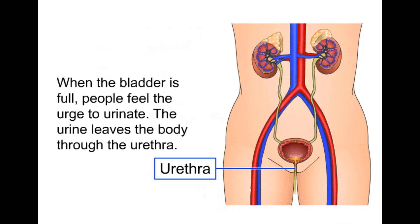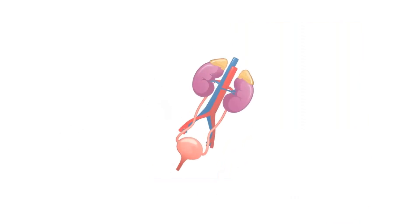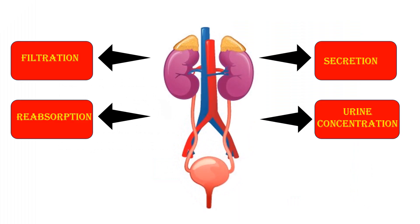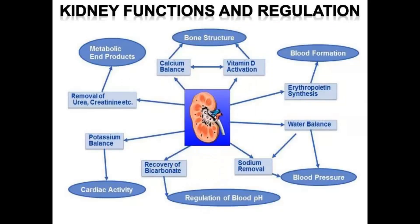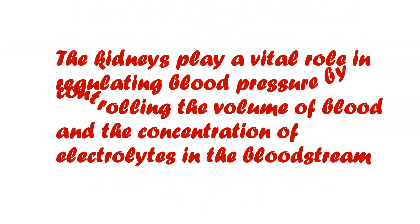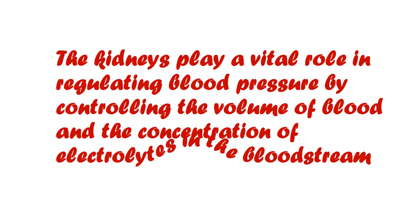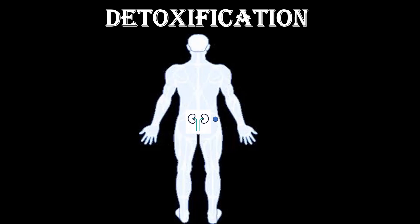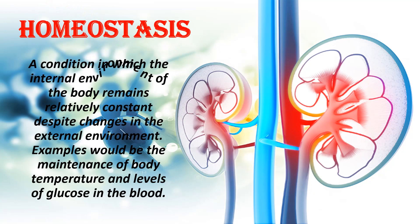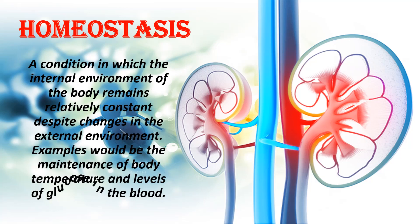The urethra is the tube that carries urine from the bladder to the outside of the body during urination. The excretory system is a vital biological system that removes excess waste products from the body and also helps in filtration, reabsorption, secretion, and concentration of urine. Additionally, the kidneys regulate blood pressure by controlling the volume of blood and the concentration of electrolytes in the bloodstream, and contribute to detoxification by eliminating toxins and foreign substances, thereby maintaining homeostasis.